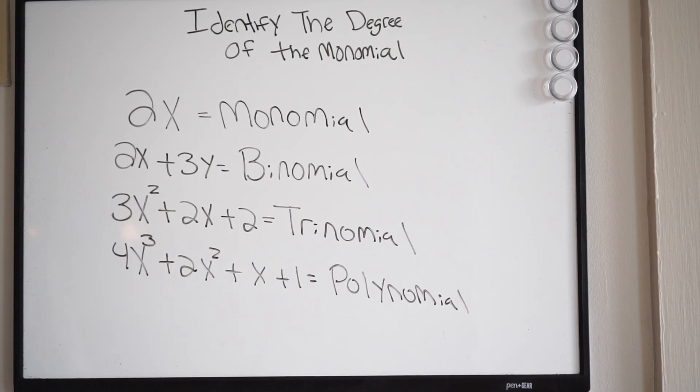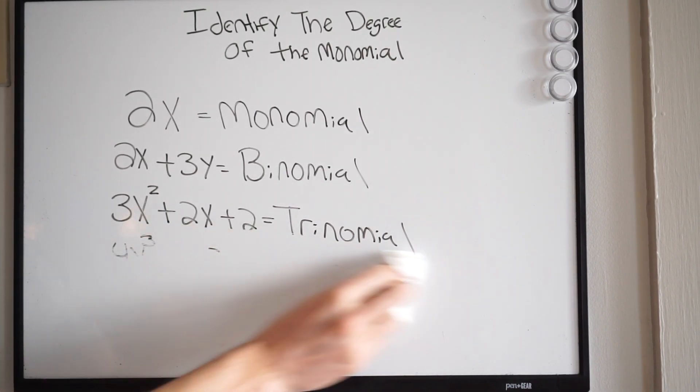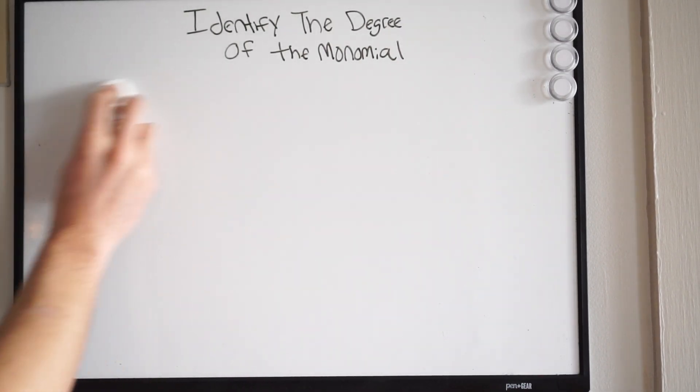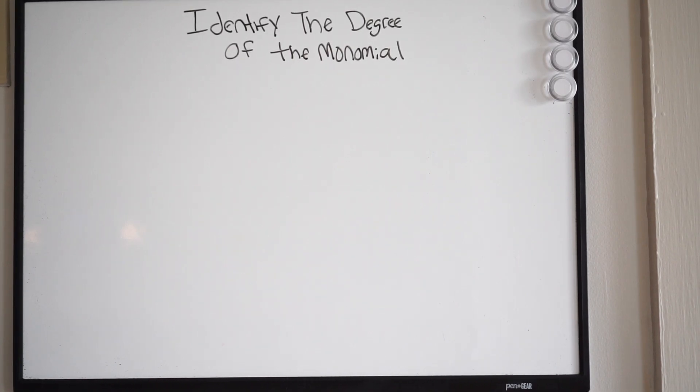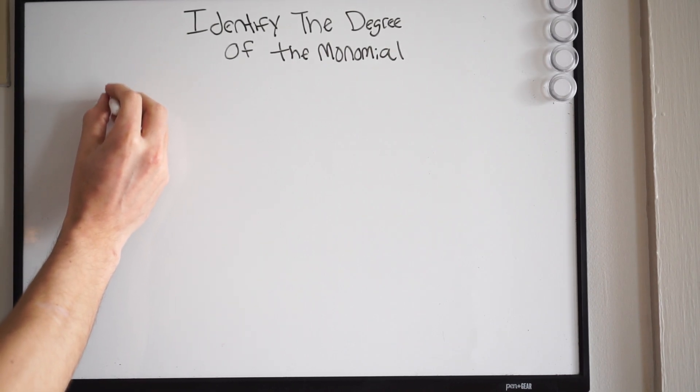Alright, so let's go into the question. It says identify the degree of the monomial. Alright, so let's look at number one. We'll use the example.